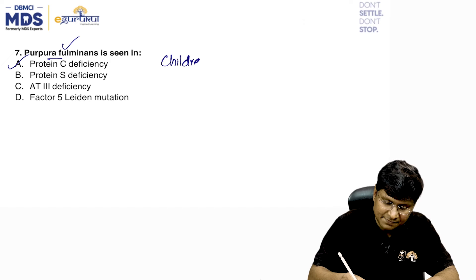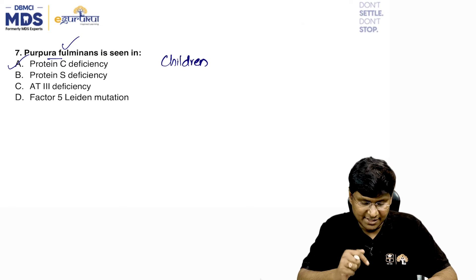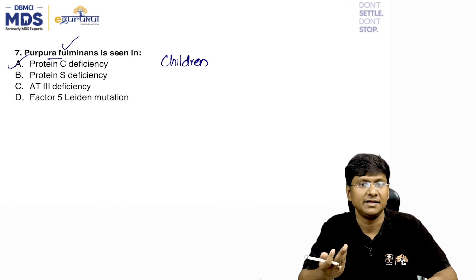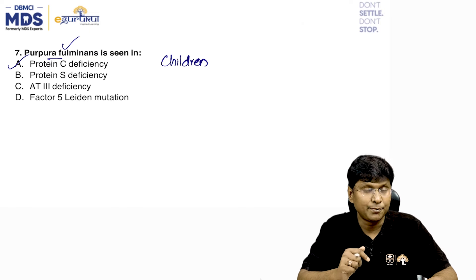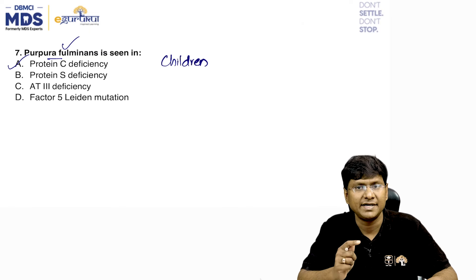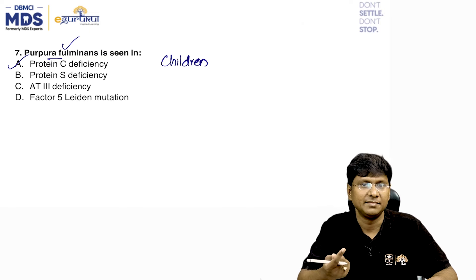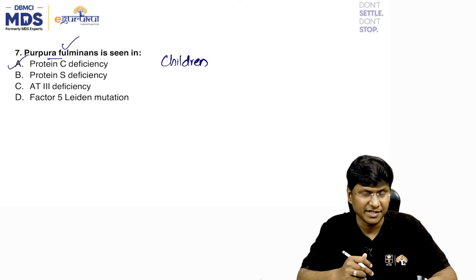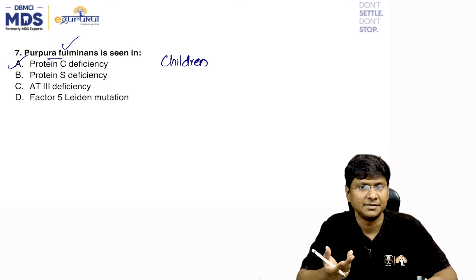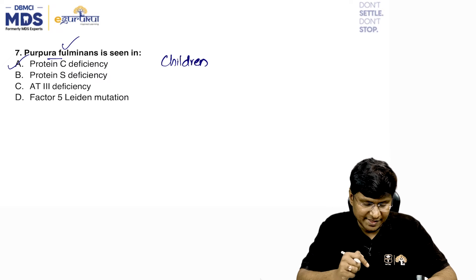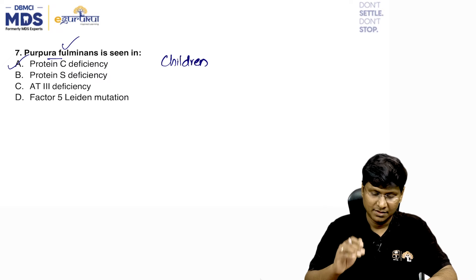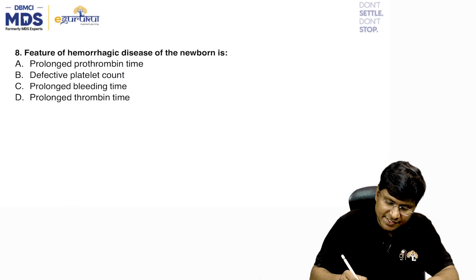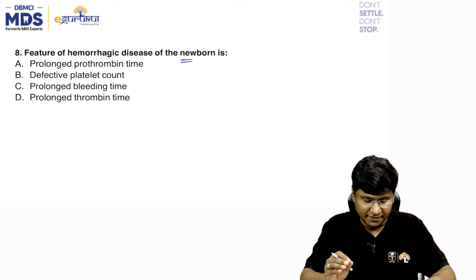Purpura fulminans is commonly observed in children and usually follows viral or bacterial infection. Protein C deficiency is an inherited form of hypercoagulability, because protein C is a natural anticoagulant. So purpura fulminans is seen in protein C deficiency.